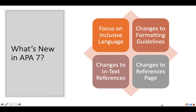APA 7 has made several key changes including a focus on gender inclusive language, changes to formatting especially for student papers, changes to in-text references, and several important changes to the references page. In this video I will focus on changes to inclusive language and formatting for student papers that are not being submitted for publication.